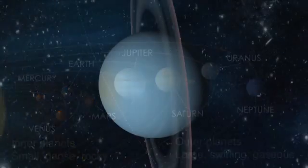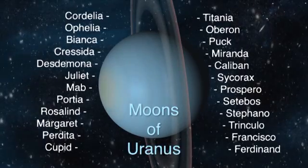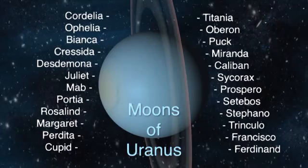Uranus also has 13 very faint dark rings and 27 moons, most of which are named for Shakespearean characters.